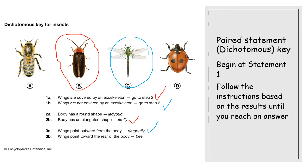For organism C: wings are not covered by an exoskeleton, so I go to step three — completely missing out step two. Statement three: 'wings point outwards from the body' — that is true — therefore it is a dragonfly. You may know that A is a bee and D is a ladybird, but you may be presented with things you've never heard of. If you just follow the statements based on what you can clearly identify, you can find out what any organism is without knowing anything about it previously.